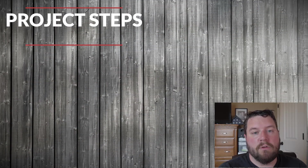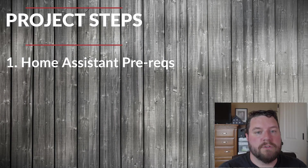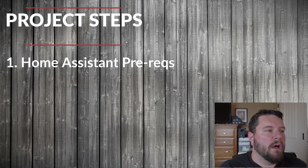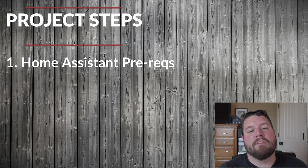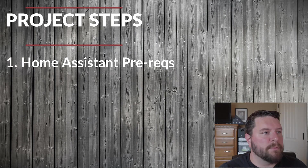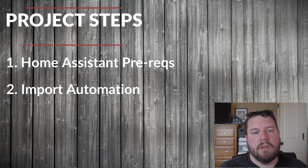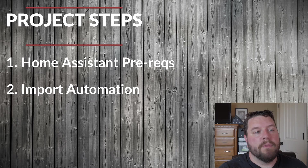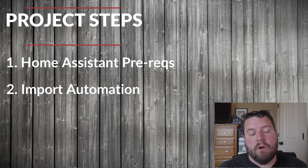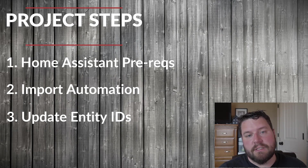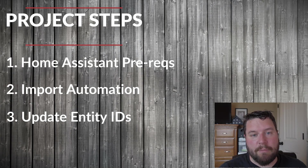The other requirement is Home Assistant itself — I'll be using what was formerly known as Hass.io, now called Home Assistant, running off my Raspberry Pi. You'll also need whatever hub connects the bulb to Home Assistant. The steps we'll go through: first I'll show the prerequisites for Home Assistant — you need to install a couple of components into your configuration. I won't show how to set up the bulb since that varies widely. I'll show you how to import the automation from the blog post linked below, then how to import the code into Node-RED, update the entity IDs, and test it.